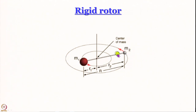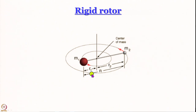Let us say we have two molecules, something like HCl. H has mass m2, Cl has mass m1. The distance of m1 from the center of mass is r1, the distance of H from the center of mass is r2, and the internuclear separation is capital R. Capital R is essentially r1 plus r2.